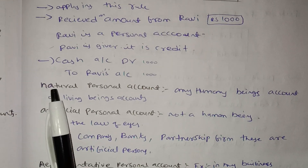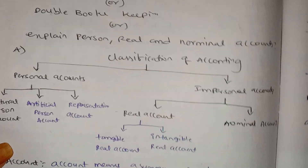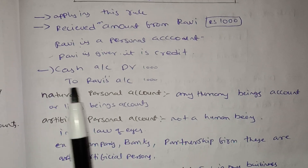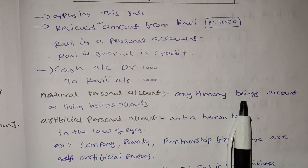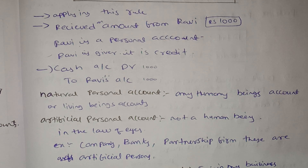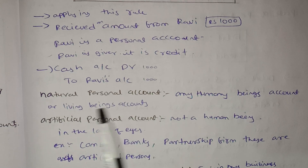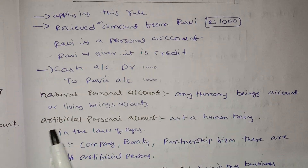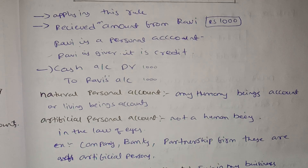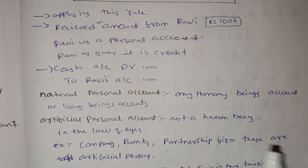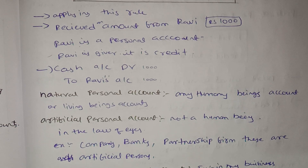Natural person accounts — I already said personal accounts are for natural persons. A natural personal account is for a human being. In the law of partnership business, that is one example. An artificial personal account is a non-human entity recognized in law.